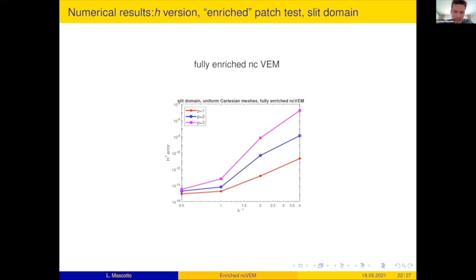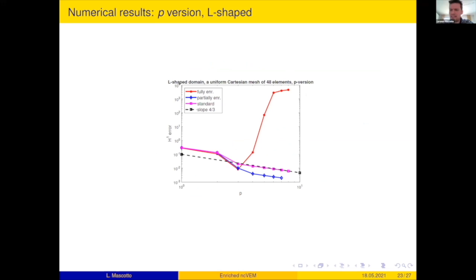Let's look at an H-version for a patch test. This is not very nice because this is again a patch test. So the error should be zero up to machine precision. Then I look for P=3 after three refinements. I get an error of 10^(-4). This is very bad. I'm still not very happy.